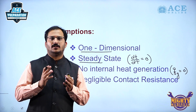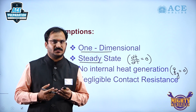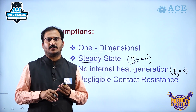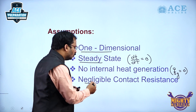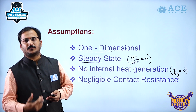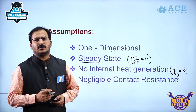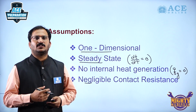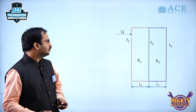When two different metals come in contact there will be certain resistance to the heat flow due to that contact. That resistance we are also neglecting in order to solve this particular composite wall condition. Here we are considering only conduction and neglecting the effects of convection also.